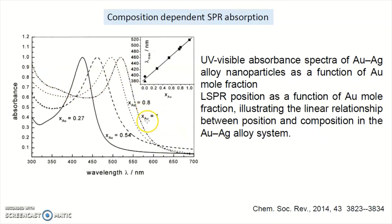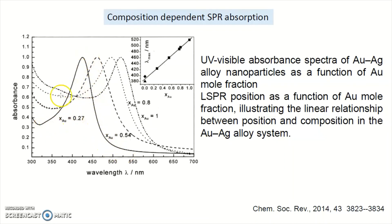As you add silver to gold — where XAu = 0.8 means 0.2 is silver and 0.8 is gold — just by adding 0.2 silver fraction in gold, you can see that its lambda max has changed. At XAu = 0.54, it is approximately 50-50, and at XAu = 0.27, approximately 73% is silver. There is a linear relationship between the percent of gold and the lambda max.